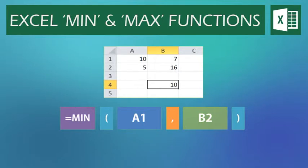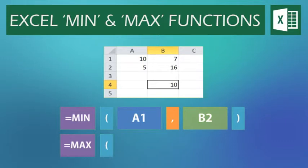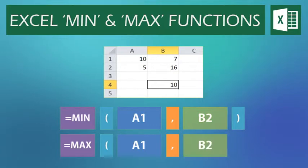If I want to find the largest value between cell A1 and B2, I can use the MAX function. So I type equals MAX, open brackets. Then my first value, A1. Then a comma to move on to the next value. And then the other value, in this case B2. I then close the brackets to finish the formula.